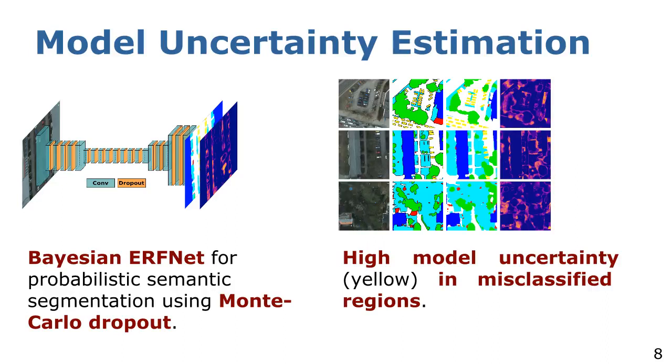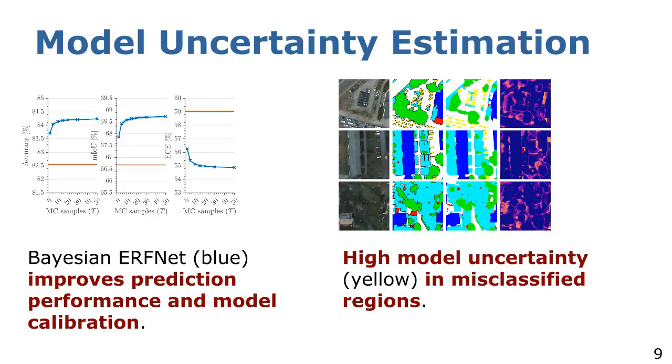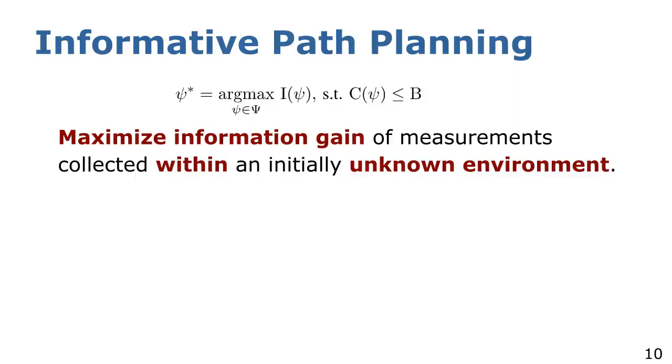The qualitative results with Bayesian ERF-Net trained on the ISPRS Potsdam dataset show high model uncertainty in misclassified regions. On the left, we display our Bayesian ERF-Net with varying Monte Carlo dropout samples at inference time in blue compared against a non-Bayesian ERF-Net in orange on the ISPRS Potsdam dataset. For 50 Monte Carlo samples, the Bayesian ERF-Net improves mean IOU by 3.1% and reduces the expected calibration error by 7.6%.